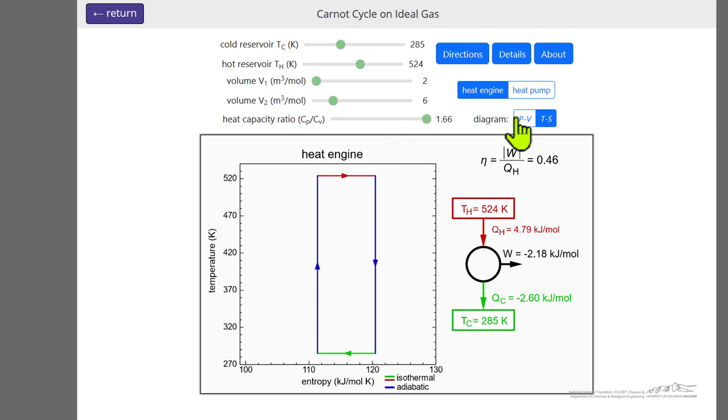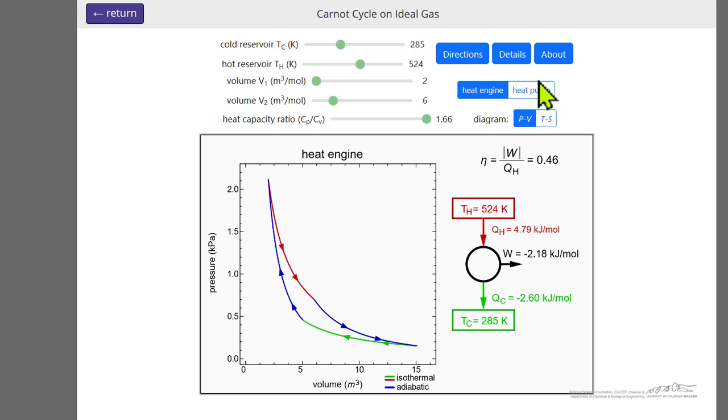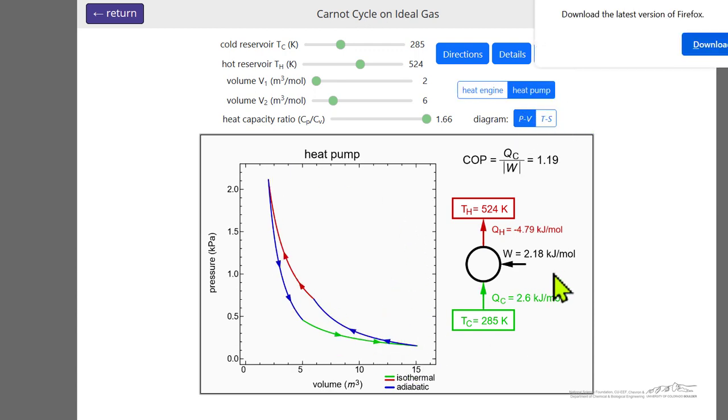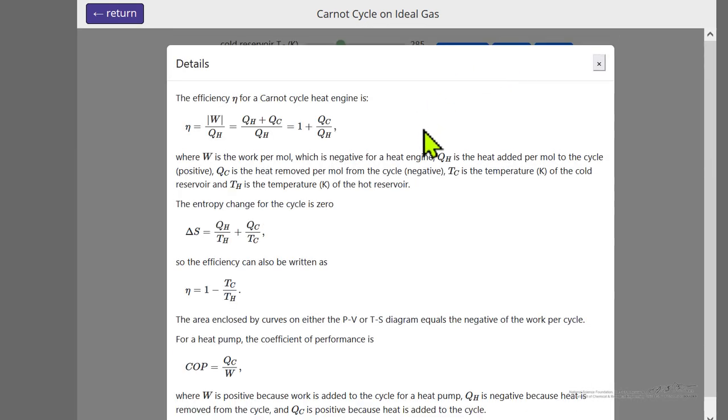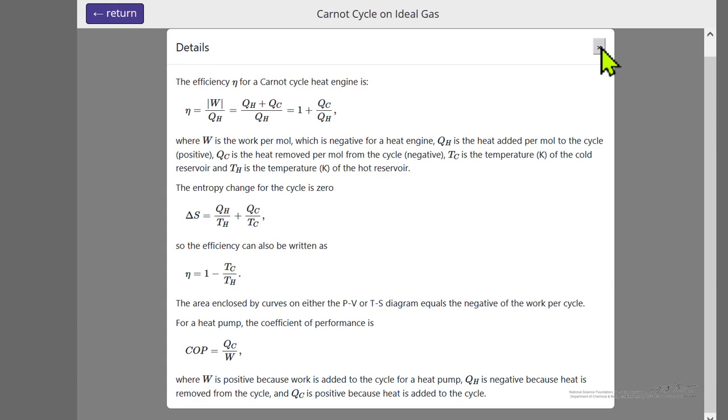Now this system, let's look at the pressure-volume diagram, can also be run as a heat pump, which means we're running in the opposite direction. Now we're putting in work and getting out heat, and we calculate a coefficient of performance. The simulation has details that show the equations used to generate these curves.